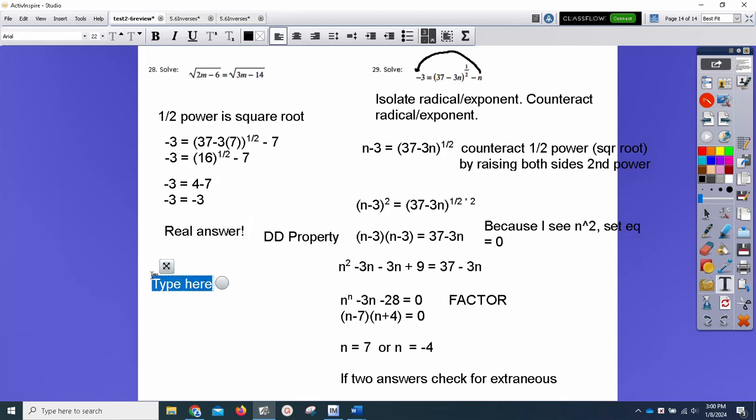What's the other answer I got? Negative 4. Negative 3 equals 37 minus 3 times a negative 4, minus negative 4. This answer is also going to work, at least I feel like it's going to. Negative 3 equals 49 to the 1 half. Because negative times negative is positive, 37 plus 12. Oh no, it's not. And then plus 4. This one fails. This is negative 3 equals square root of 49, 7 plus 4. And this fails. So n equals negative 4 is extraneous.